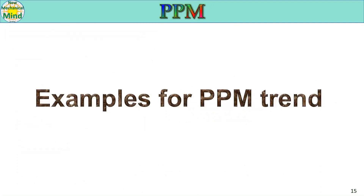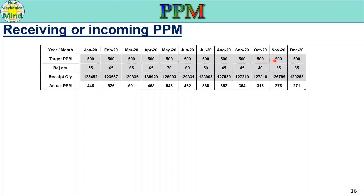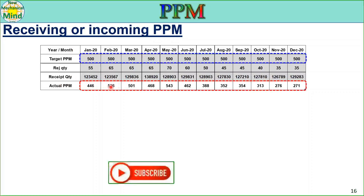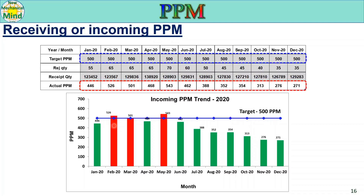Now let us see examples for PPM trend. For receiving or incoming PPM: in this table, the target PPM is given as 500 for the entire year; rejection quantity and received quantity are also mentioned. Actual PPM is calculated using the formula. A PPM trend is then prepared with target plotted as a line graph and actual as a bar graph. Where actual PPM exceeds target, it is indicated in red; where actual PPM is below target, it is indicated in green. This is a typical PPM trend where the target is the same every month.